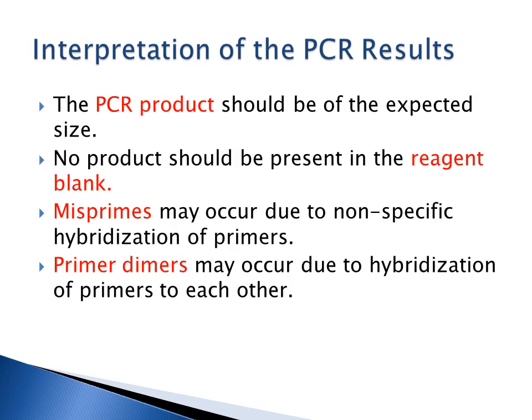When interpreting PCR results on a gel, your PCR product or amplicon should be the expected size compared to your molecular marker. There should not be any product in the blank control. Look for mispriming — extra bands in addition to your expected band — which occurs if primers hybridize nonspecifically. Also look for primer dimers at the bottom of the gel.